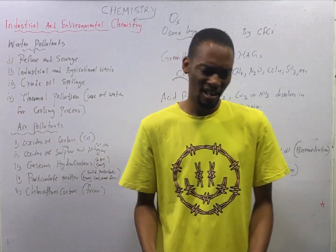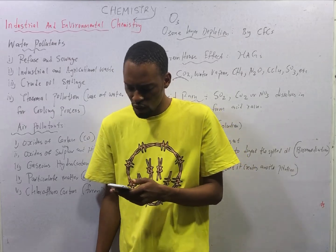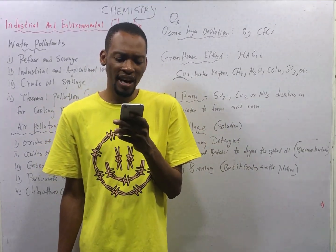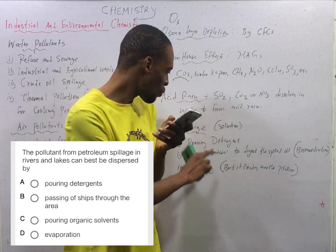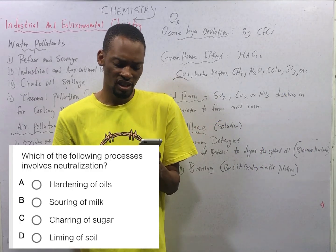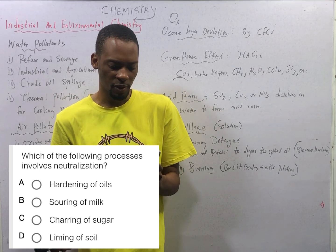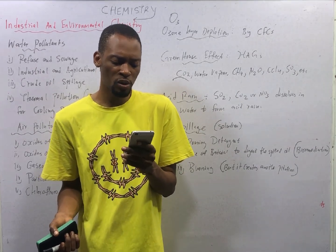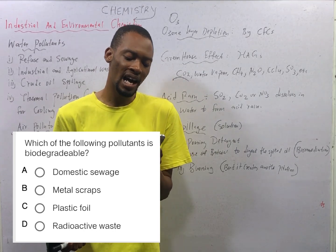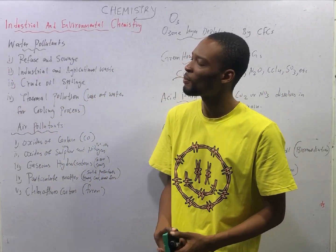Ladies and gentlemen, that covers industrial and environmental chemistry. Let's take a look at about three questions from the Flash Learner Jam application. The pollutants from petroleum spillage in rivers and lakes can best be dispersed by pouring detergent. Which of the following processes involves neutralization? Liming of the soil involves neutralization, because you are trying to reduce the acidity of the soil. And which of the following pollutants is biodegradable? Domestic sewage is biodegradable. Metal scraps, plastic foil, and radioactive waste are not biodegradable.